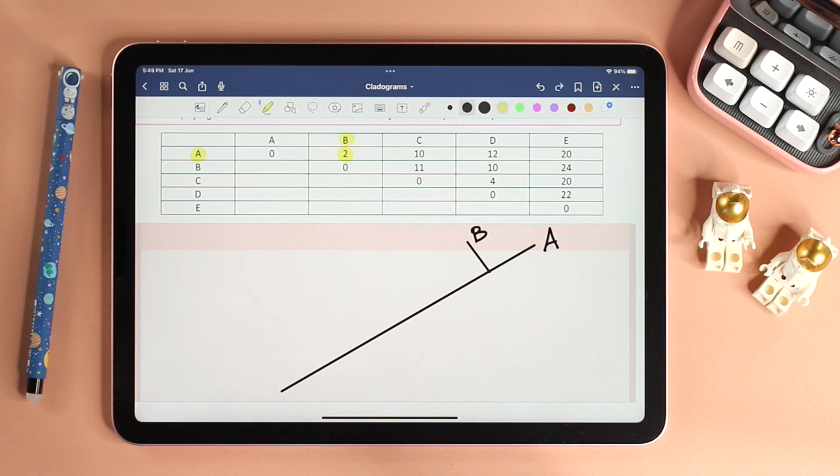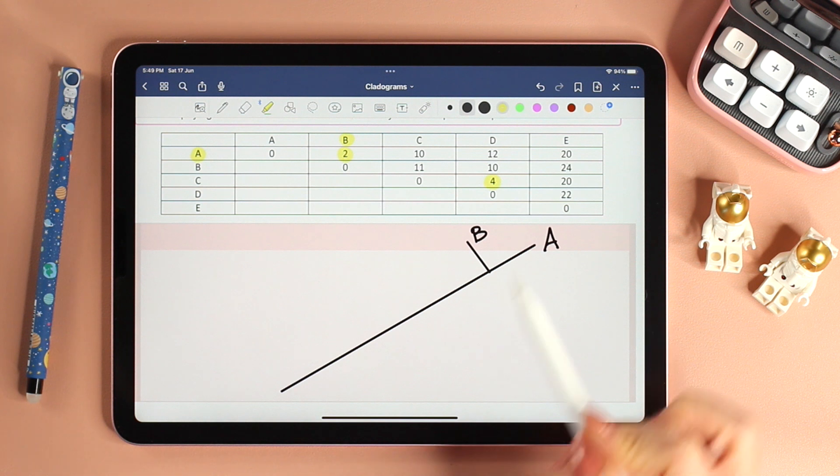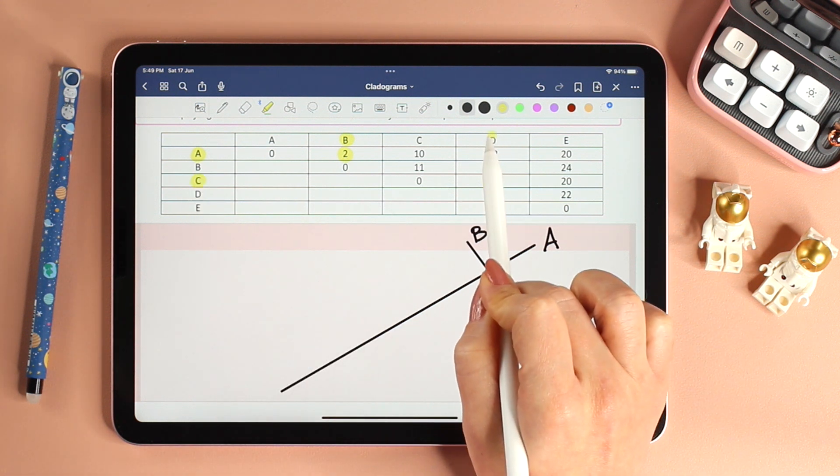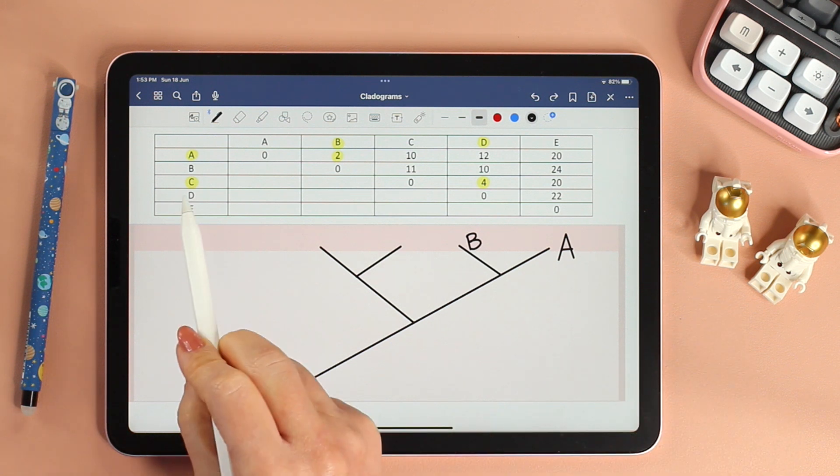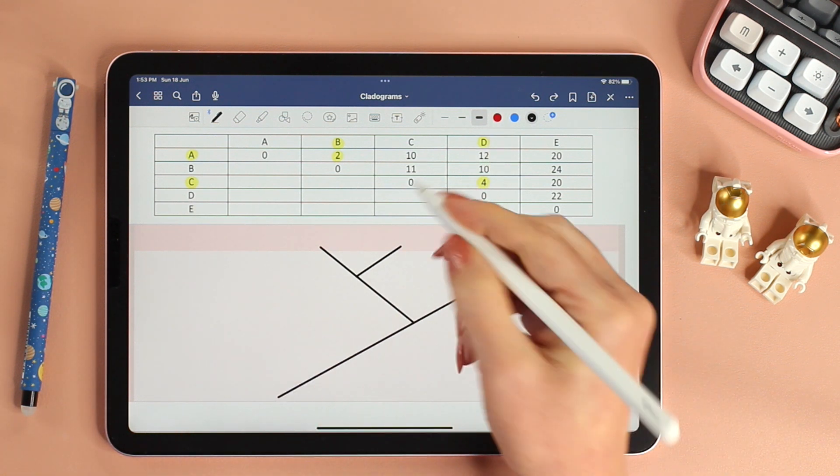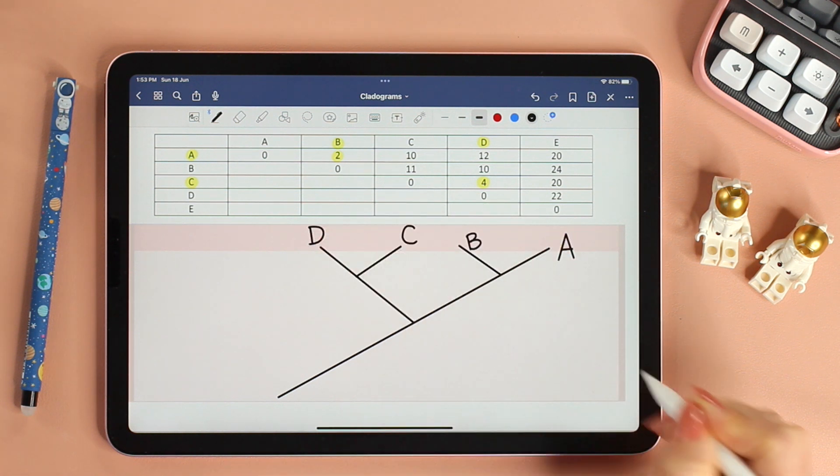Now search for the second smallest number. In this table, it is 4, which is the number of amino acid differences between C and D. We will place C and D together on the tree.